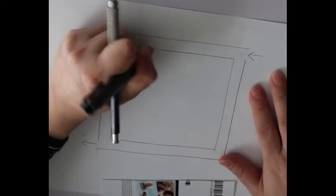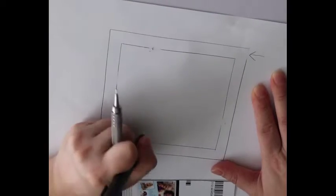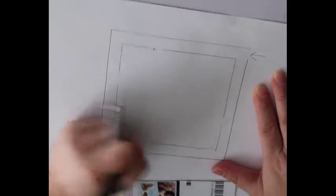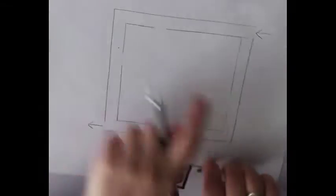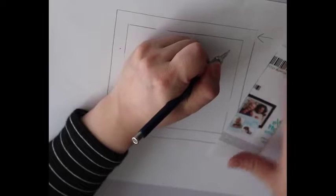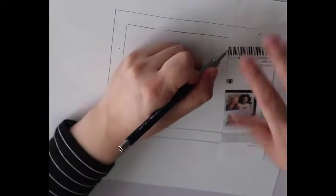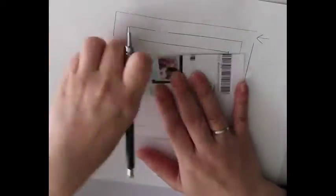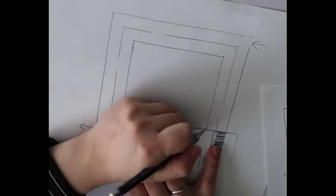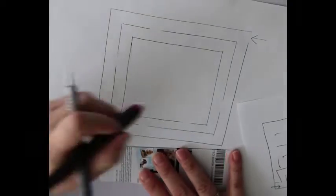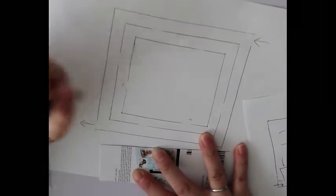Now I'm going to randomly erase some part of the line to make paths for the maze. It doesn't have to be exactly the same as mine, just make some holes for the entry. And then I'm going to draw another square inside. Okay, and again I'm going to erase some parts in this as well.